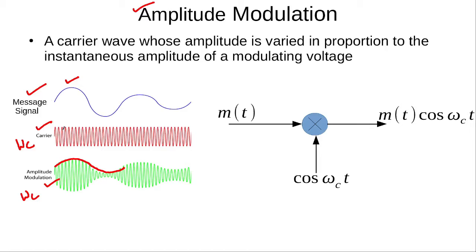This amplitude modulated signal can easily be obtained by multiplying the message signal with the carrier, and this multiplication can be achieved using a mixer. If we have the message signal m(t) and multiply it with the carrier cos(omega_c * t), we get the amplitude modulated signal m(t) * cos(omega_c * t).